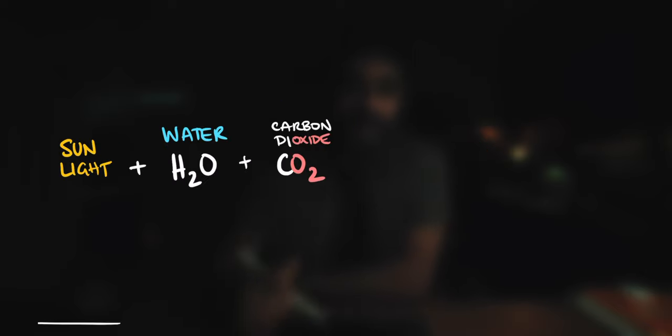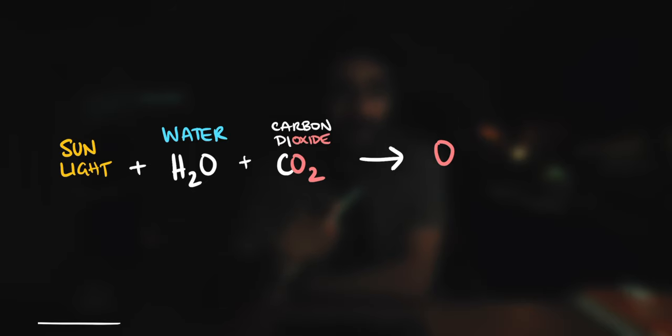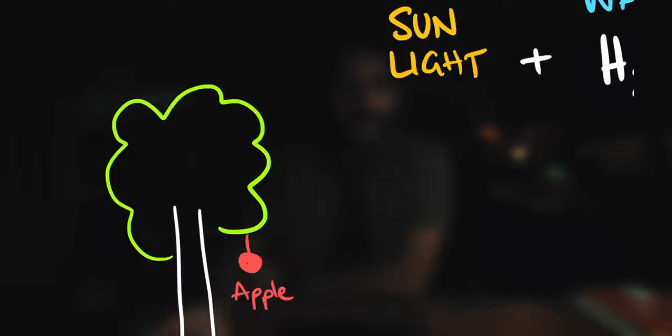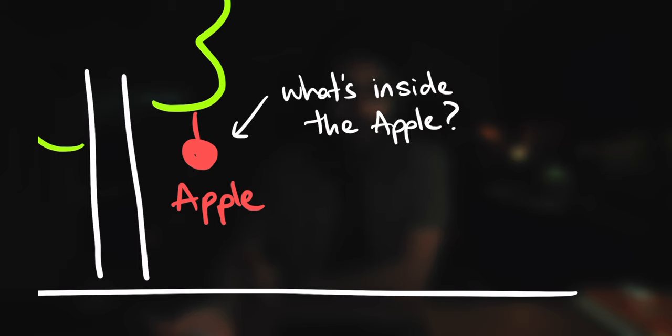He's like, plants have the incredible ability to take these three things and transform them into two things that all humans need. He's like, you already said one of them. I was like, oxygen. He was like, yes, they make oxygen. And one more thing. Then he was like, here's a hint, what's inside the apple? I was like, sugar? He's like, yes. What's the most common sugar that you know about? Interestingly, immediately after that, he started to draw the structure of a molecule that we had coincidentally learned two weeks earlier.